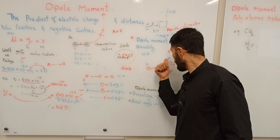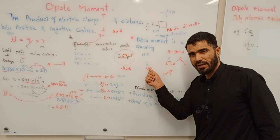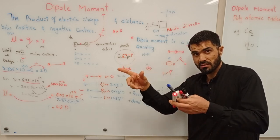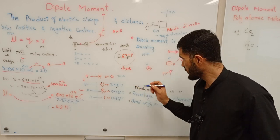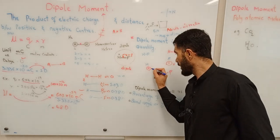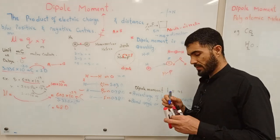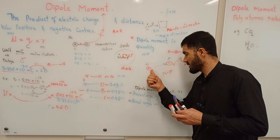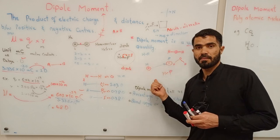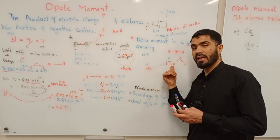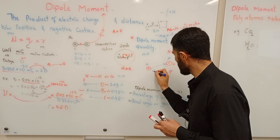In a molecule like HF, hydrogen is partially positive and fluorine is partially negative. To represent the dipole moment, you draw a line from the positive charge to the negative charge and add an arrowhead at the negative end. The rule is: the arrow goes from positive to negative. Drawing it the other way is incorrect.